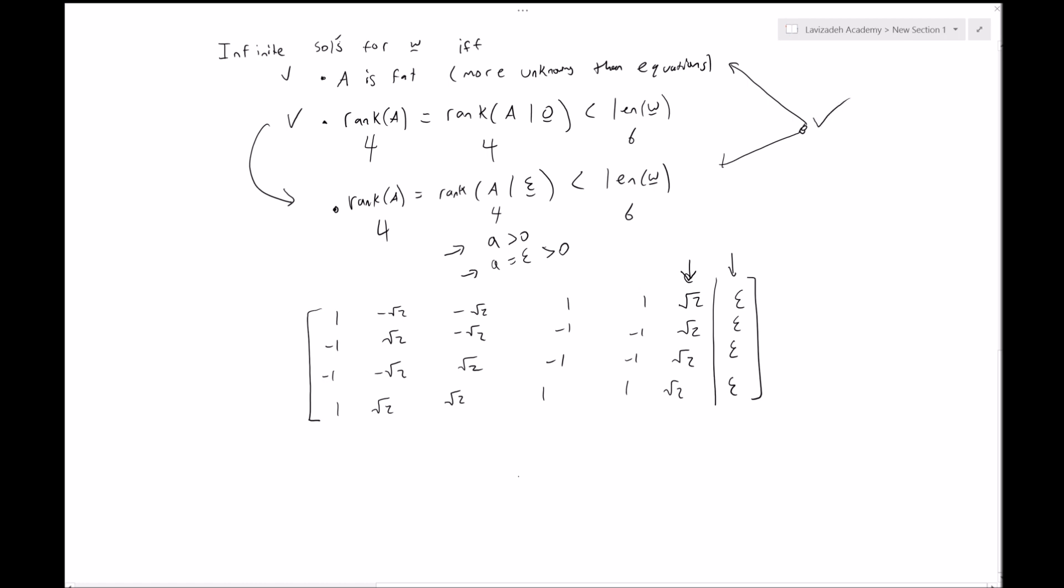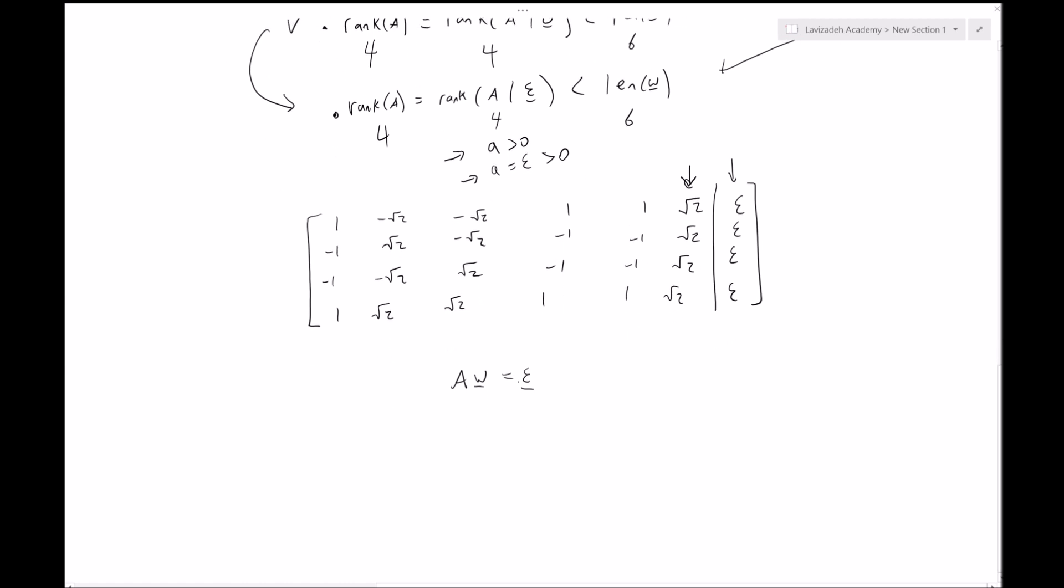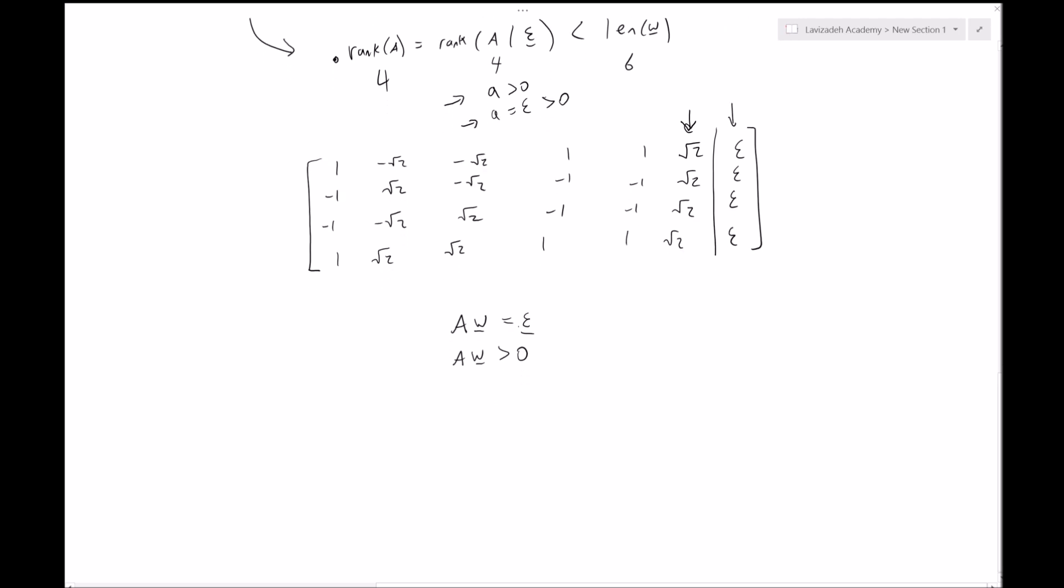This is satisfied, right? So these two equations are satisfied. What that's saying is that this system of equations, let's say called the epsilon vector, has infinite solutions. If this has infinite solutions, then this has infinite solutions, which means that there's an infinite number of weight vectors that linearly separate the data. In other words, yes, the data is linearly separable.